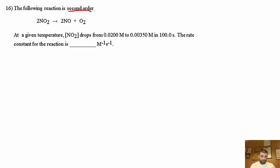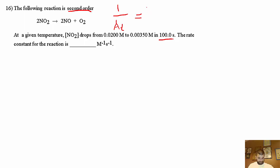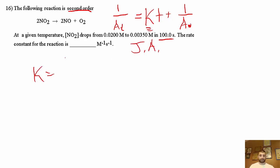Problem 16: the following reaction is second order. At a given temperature, NO₂ drops from 0.02 molar to 0.0035 molar in 100 seconds. The rate constant for this reaction is blank. For second-order change over time, the equation is: 1/[A]t = Kt + 1/[A]0. Solving for K with algebra gives: K = (1/[A]t − 1/[A]0) / T. The initial concentration 0.02 M is our A0.